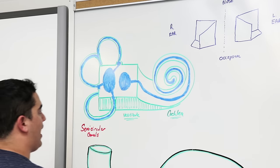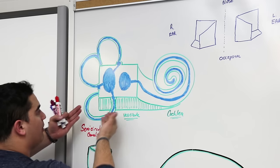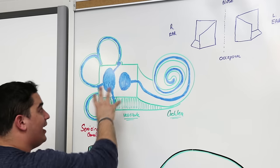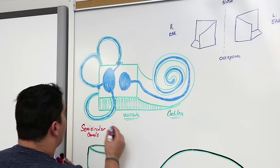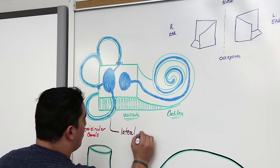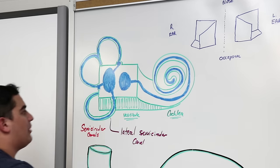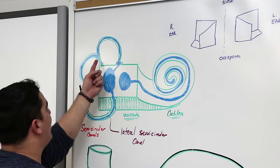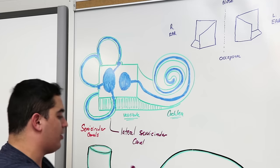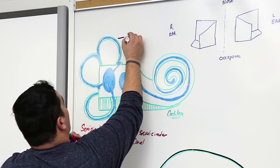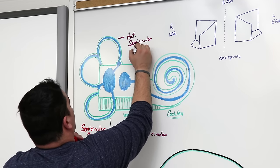Let's go over the different semicircular canals. Pretend this is the right inner ear structure, pointing out towards your ear — towards the auricle. This one right here is going to be called the horizontal or the lateral semicircular canal. Then you're going to have another one coming up like this, called the superior or the anterior semicircular canal.